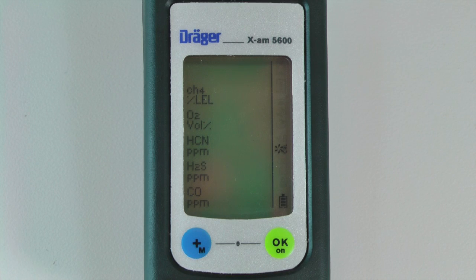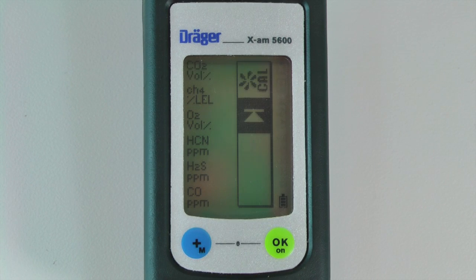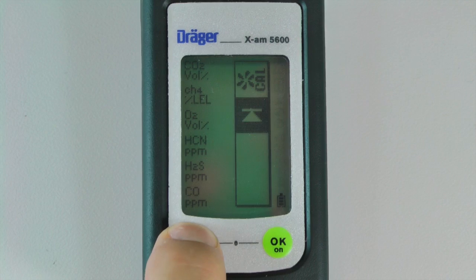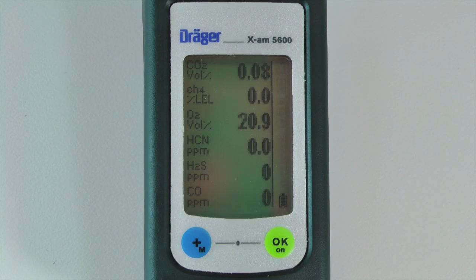To perform the calibration, press OK. The sensor readings should all read OK once the calibration is complete. You can then press the plus button to return to measuring mode.